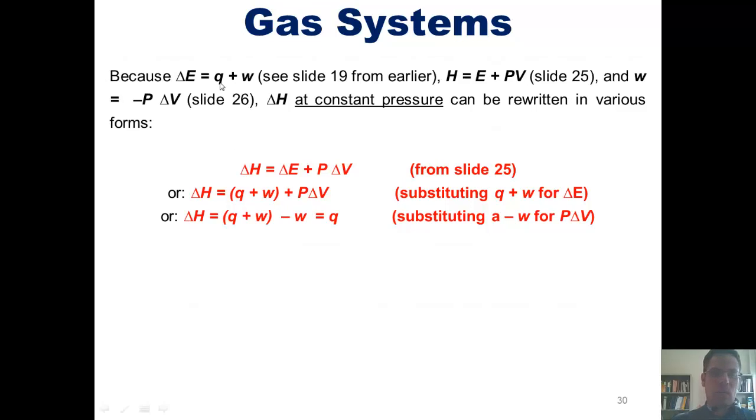Now because delta E equals Q plus W, which we talked about in an earlier slide, and enthalpy equals energy plus pressure times volume, and pressure-volume work equals negative P times delta V, delta H at constant pressure can be rewritten in various forms shown here.